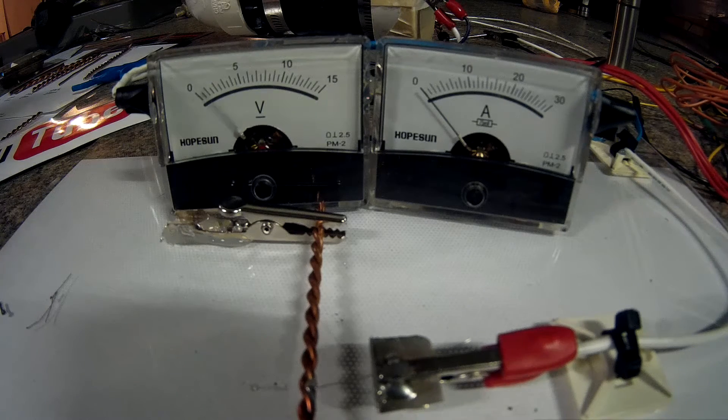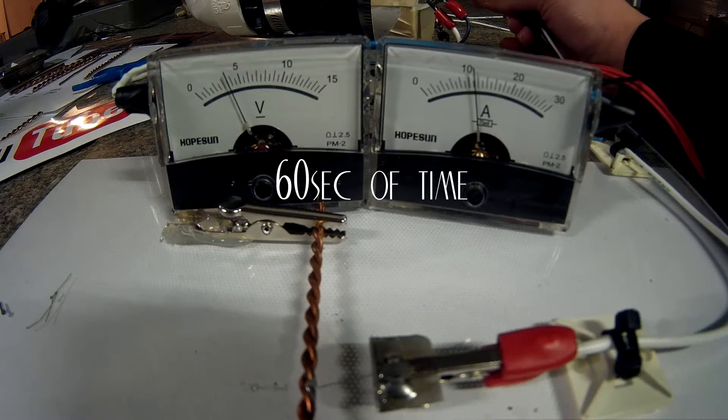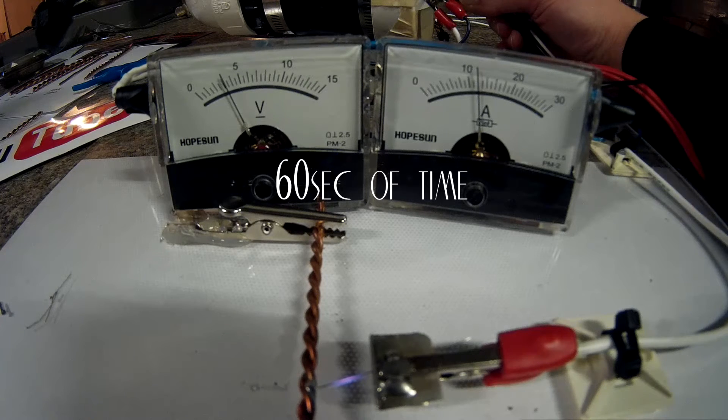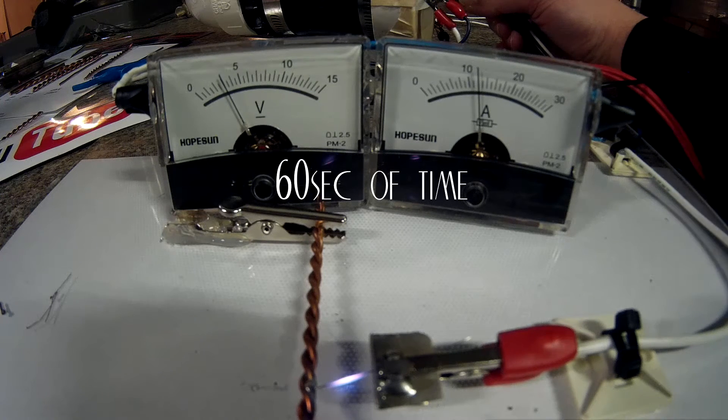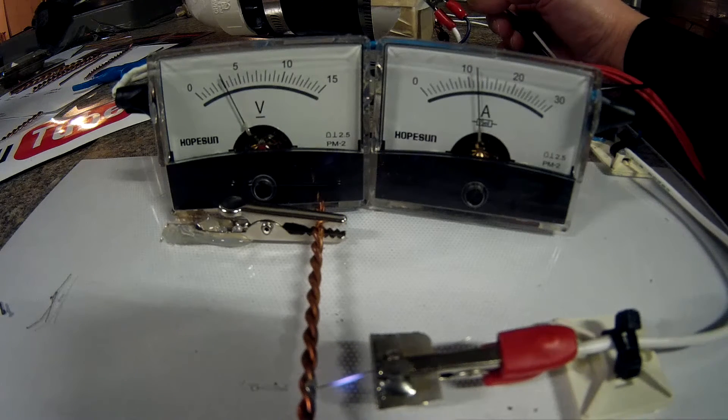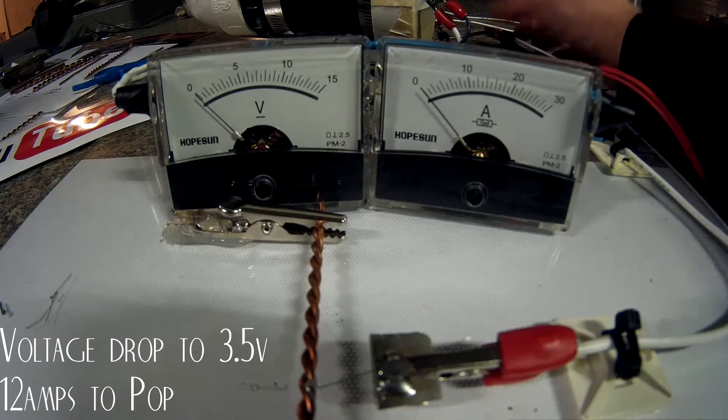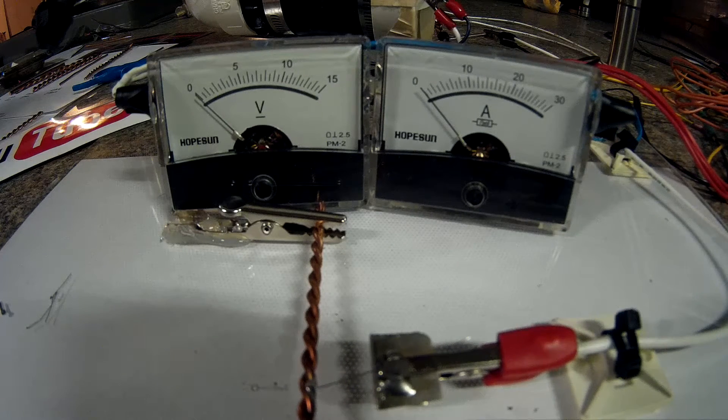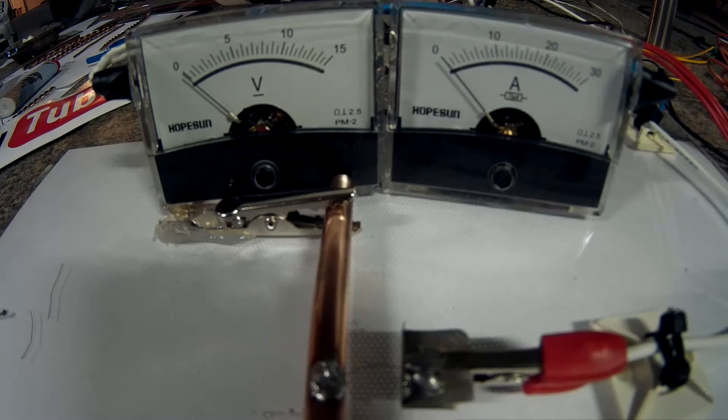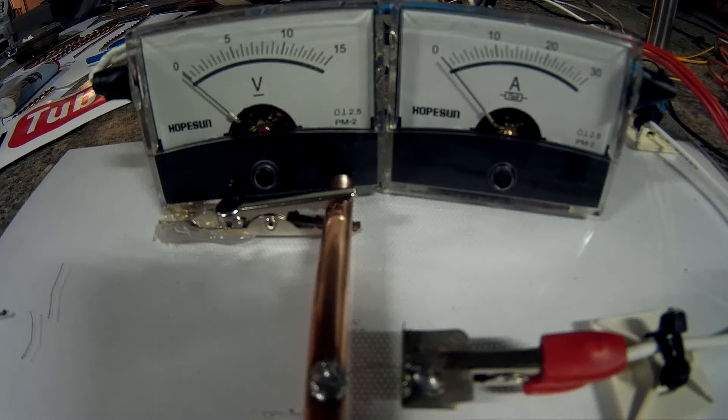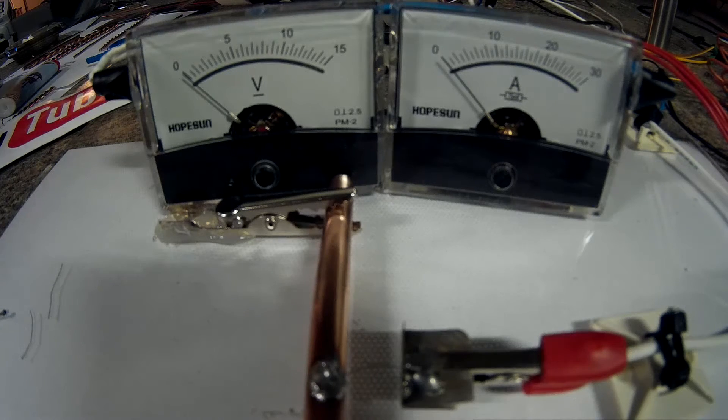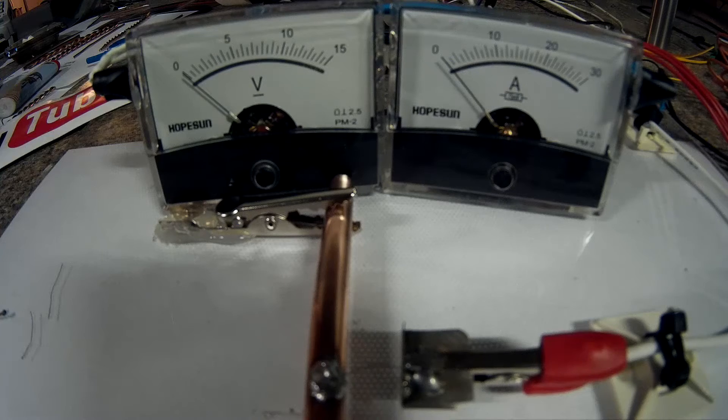Okay, next test is the 14 gauge twisted pair or 1.63 millimeters and the gap on this one is 10.64. Contact. Okay, of course I'll have to look at the video to see where that one popped, but it was probably around 11 or 12. Okay, the next test is the copper tube and it is 6.35 millimeters in diameter and the wall thickness is 0.6 millimeters and the gap is 10.24 millimeters. Contact.